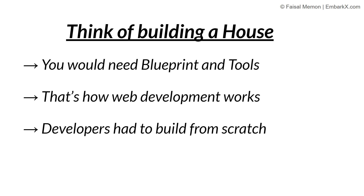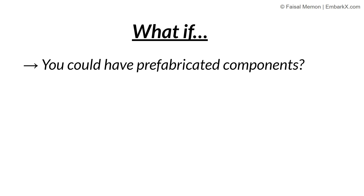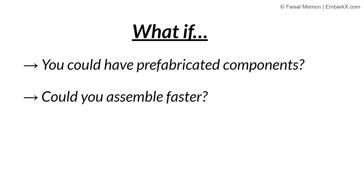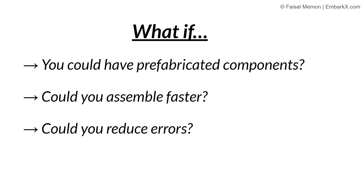There had to be a better way. Imagine when building a house you have prefabricated components — pre-built walls, windows, and doors of different sizes. Depending on the size of the house you're building, you can pick the wall, door, and windows based on your requirement. That would lead to faster assembling, fewer errors, and much more precision, because these are just the repetitive tasks you need whenever you build a new house.